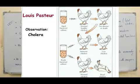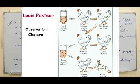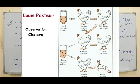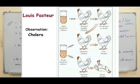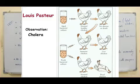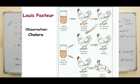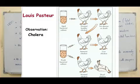This figure shows the classic experiment of Pasteur with chicken cholera. The first test tube shows the aged bacterial culture which, when injected into normal healthy chickens, did not cause disease — the hens were safe. The second test tube shows fresh bacterial culture: when injected into fresh chickens, the chickens died, but when injected into previously exposed chickens, they were immune and survived.